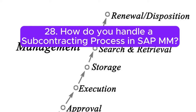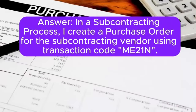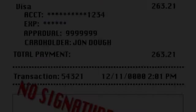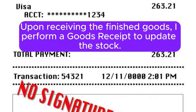Question 28: How do you handle a subcontracting process in SAP MM? Answer: In a subcontracting process, I create a purchase order for the subcontracting vendor using transaction code ME21N. Upon receiving the finished goods, I perform a goods receipt to update the stock.